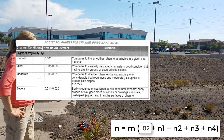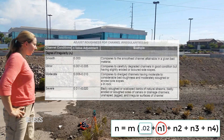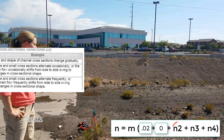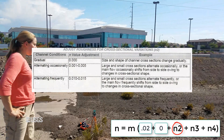Next is an adjustment for channel irregularities, or n1. The adjustment values range from 0 to 0.020. This channel is in excellent condition, so I will say it has a smooth degree of irregularity and assign it a value of 0 for n1. Next we adjust for cross-sectional variations, or n2. This value ranges from 0 to 0.015 based on how the channel changes as we move downstream. It looks like we have very gradual changes in this channel, so I'm going to assign a value of 0 for n2.